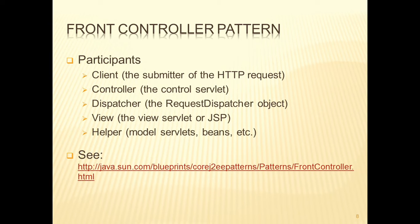If we were to look at the pattern description, which you can find on the URL listed at the bottom of the screen, we'd find that there are certain participants. The client is the program — web browser, Java application, whatever it might be — that submits the request to the front controller. The controller is the control servlet in our applications. The dispatcher is what will manage the invocation of the other components, and in our examples the request dispatcher is what the controller has been using to dispatch the request and move it on to other components.